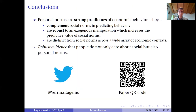To conclude: personal norms are a strong predictor of economic behavior. They complement social norms and are robust to exogenous manipulation. They are also distinct from social norms across a very wide array of economic contexts. This builds robust evidence that people do not only care about social norms, but also personal norms.